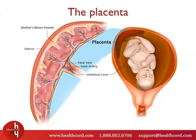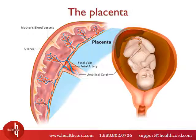The placenta is a temporary organ that grows during pregnancy. It's the only dispensable organ in the human body. The placenta attaches to the wall of the uterus and forms a connection between the mother and the developing baby.